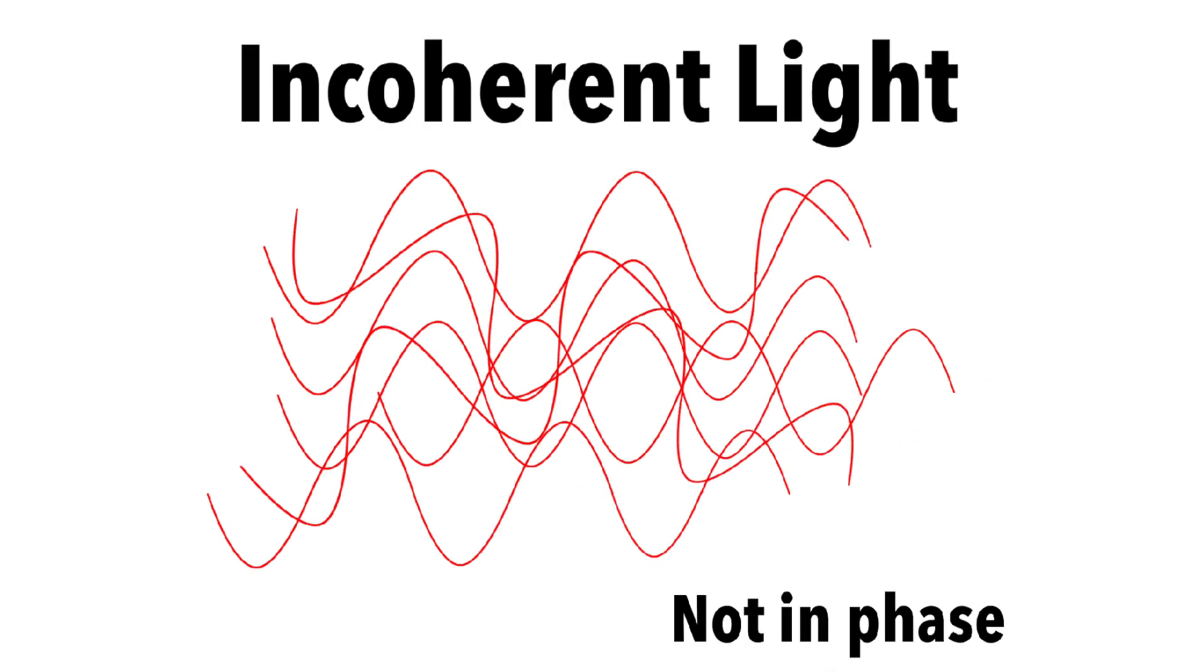Versus incoherent light, as you can clearly tell, all the light waves are mixed together. So incoherent light is used in our day-to-day light bulbs, which is why our day-to-day light bulbs diffuse the light and are capable of lighting up a full room.